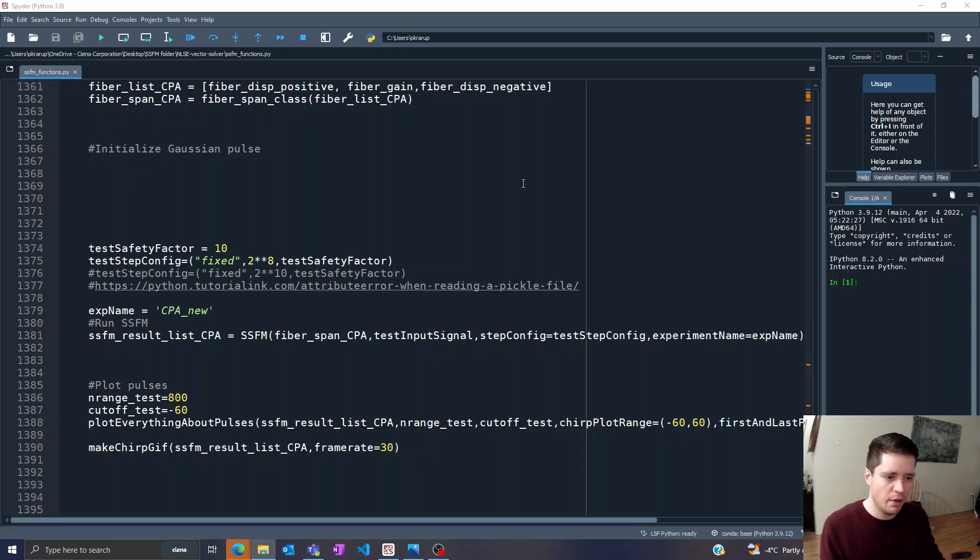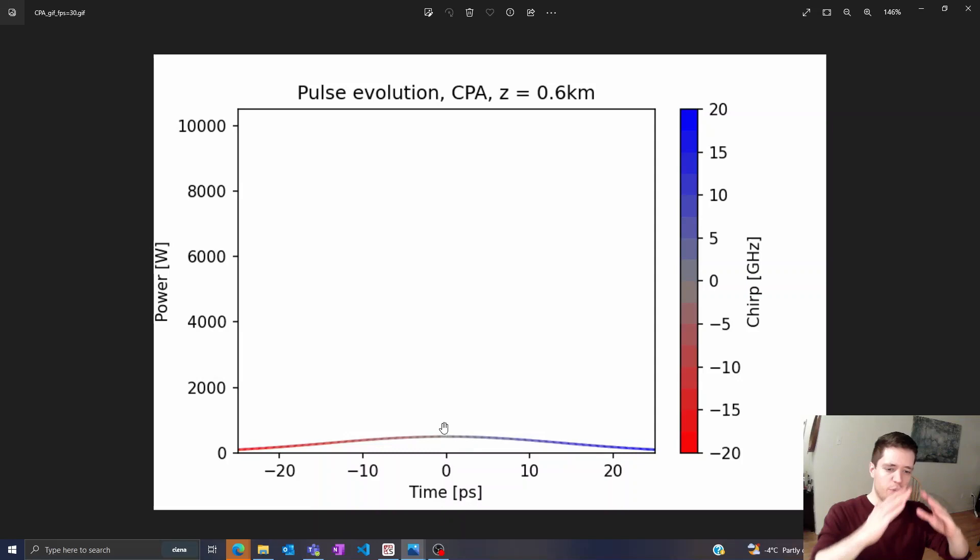So having done that, we can take a look at the animation that pops out on the other end here. In this case you can see that initially the Gaussian pulse begins to spread out in the time domain with a red chirp in the front and a blue chirp in the back.